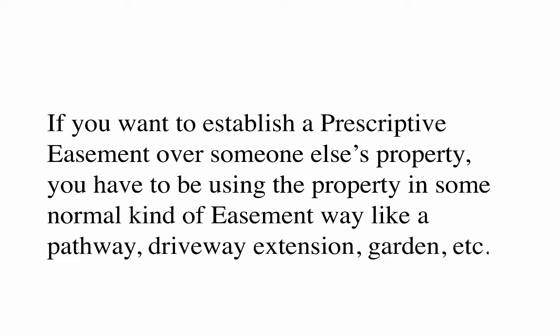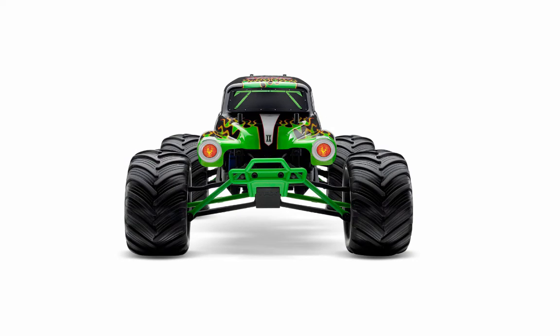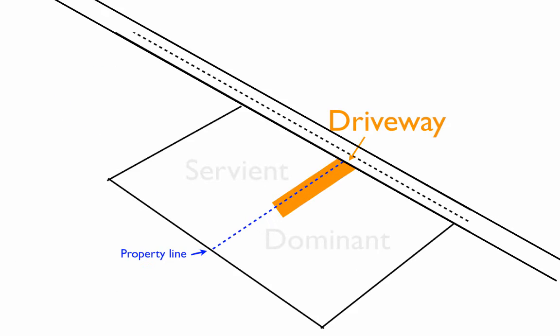If you want to establish a prescriptive easement over someone else's property, you have to be using the property in some normal kind of easement way, like a pathway, driveway extension, or garden. For example, assume that you have a driveway on the edge of your property that runs alongside your neighbor's property, which was put in place on what you thought was the border, but turned out to be five feet on your neighbor's side.